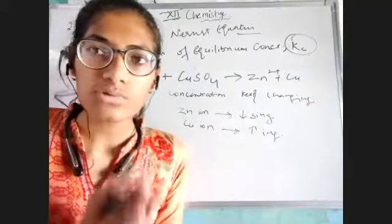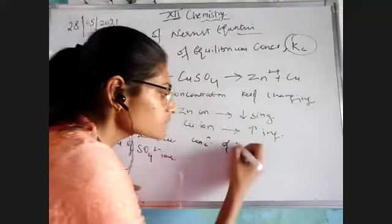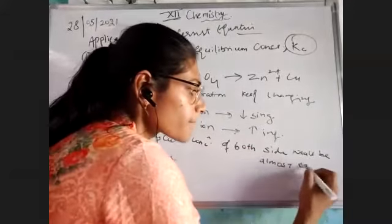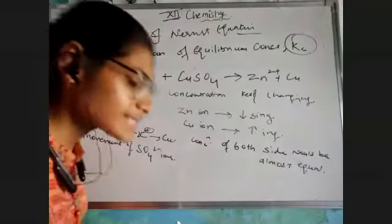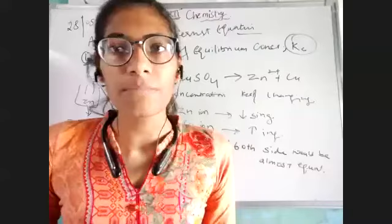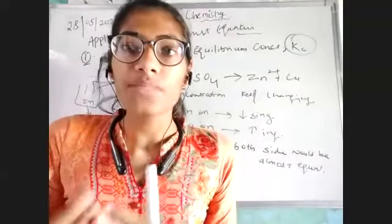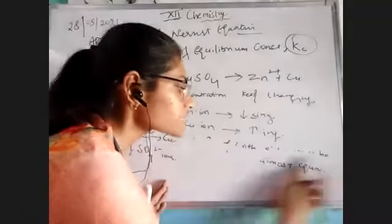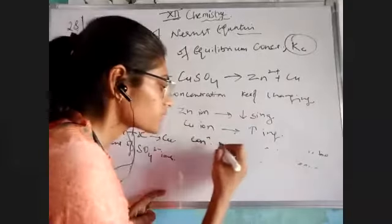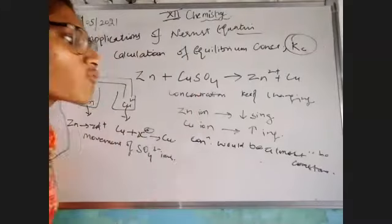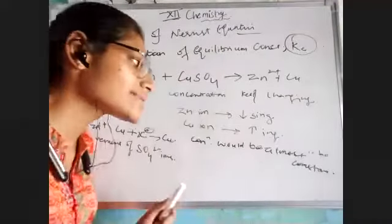That means the zinc ion concentration is decreasing whereas the copper ion concentration is increasing. The concentration always keeps changing in the electrochemical cell. From this observation, we know that after some time there would be a point when the concentration of both sides would become constant — no more tendency for further change. The concentration would not be equal; the concentration would be constant.